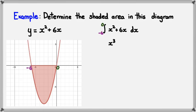So, we integrate the function. We have X cubed over 3 plus 3X squared, and that's between 0 and negative 6.